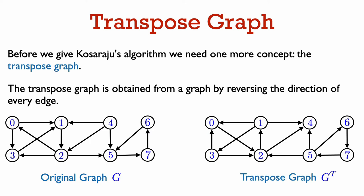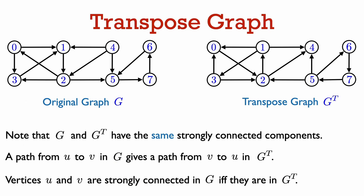Before we give Kosaraju's algorithm, we need to introduce one new concept, which is the transpose of a graph. Given a directed graph G, the transpose graph is obtained by reversing the direction of every edge in the graph. The name comes because the adjacency matrix of the transpose graph is just the transpose of the adjacency matrix of the original graph. A key thing to note is that G and G-transpose have exactly the same strongly connected components. If there's a path from U to V in G, then this gives a path from V to U in G-transpose, since the edge directions are reversed. So two vertices U and V are strongly connected in G if and only if they're strongly connected in G-transpose.